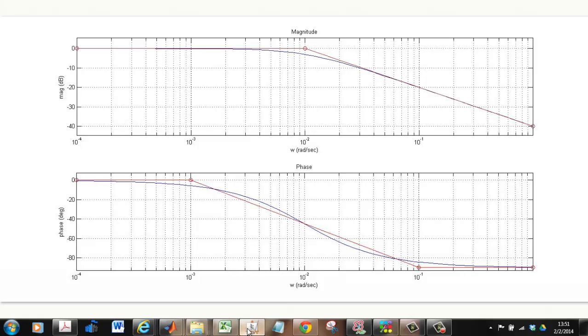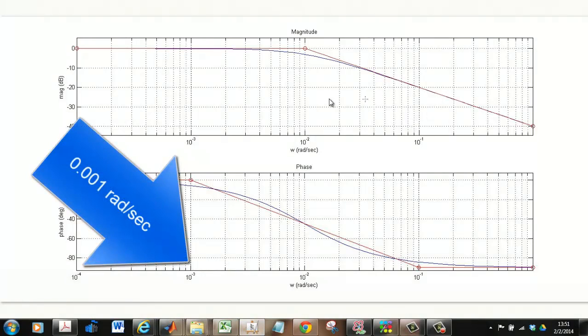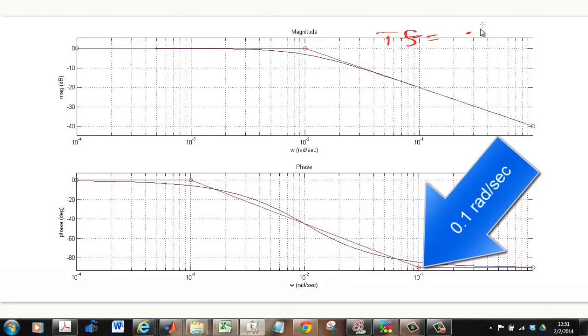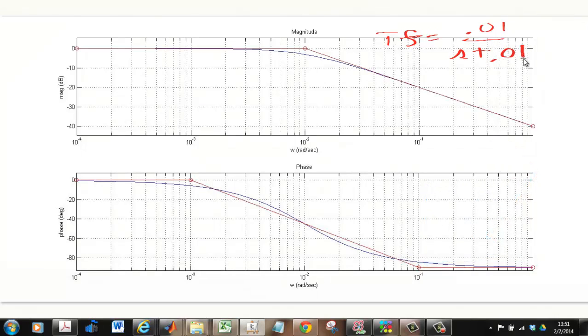Now, if you understand this, go to 1 tenth of the break frequency at 0.001 or 10 to the minus 3 radians per second and repeat drawing the input and the output sinusoids. Then go to 10 times the break frequency at 0.1 radians per second and do the same thing. Draw the input and the output. Turn those in with your next readiness check and I'll give you an extra 5 points if they are correct. Again, your break frequency is 10 to the minus 2 or 0.01 radians per second, and repeat what I did for the sinusoid at 1 tenth and 10 times that number to see if you understand what this is about. Thank you.